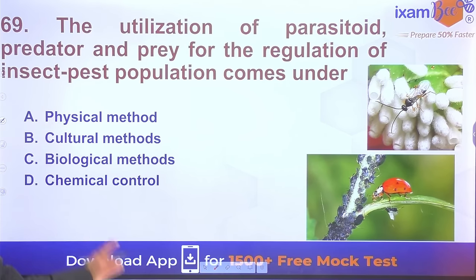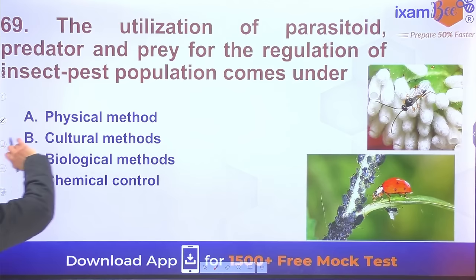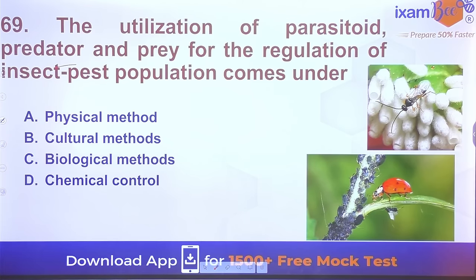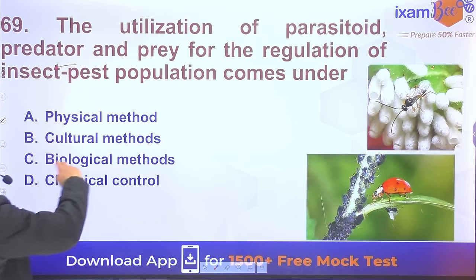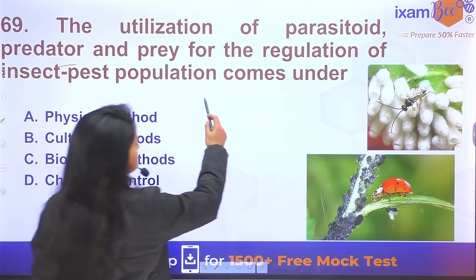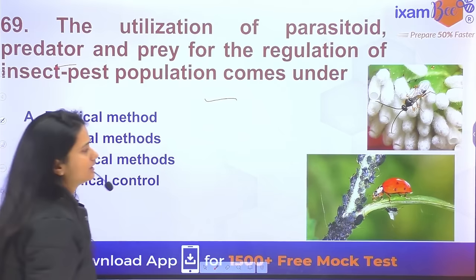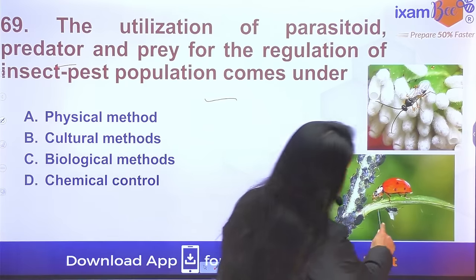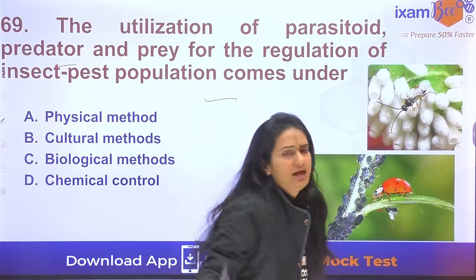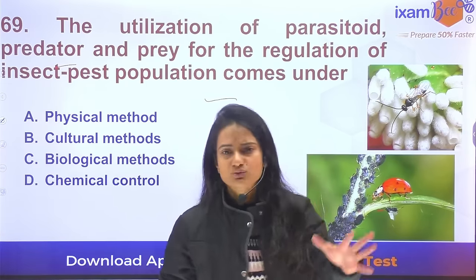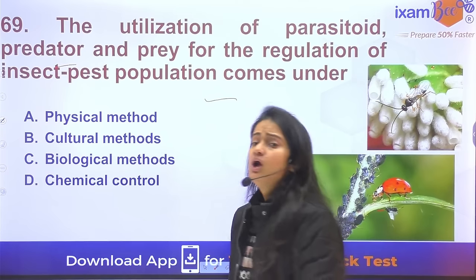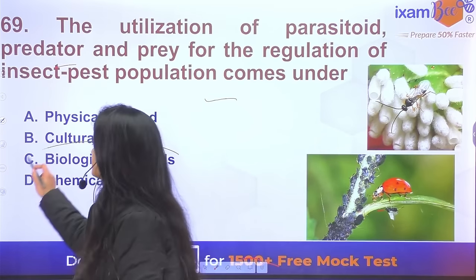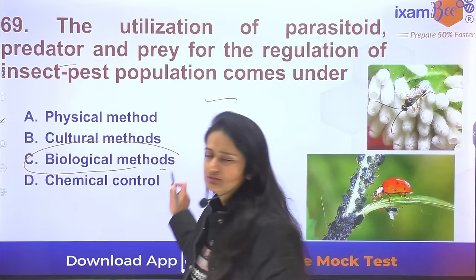Question 69: The utilization of parasitoids, predators, and prey for the regulation of insect pest populations — when we use one insect to control another insect using biological agents — this is called the biological method of pest control.